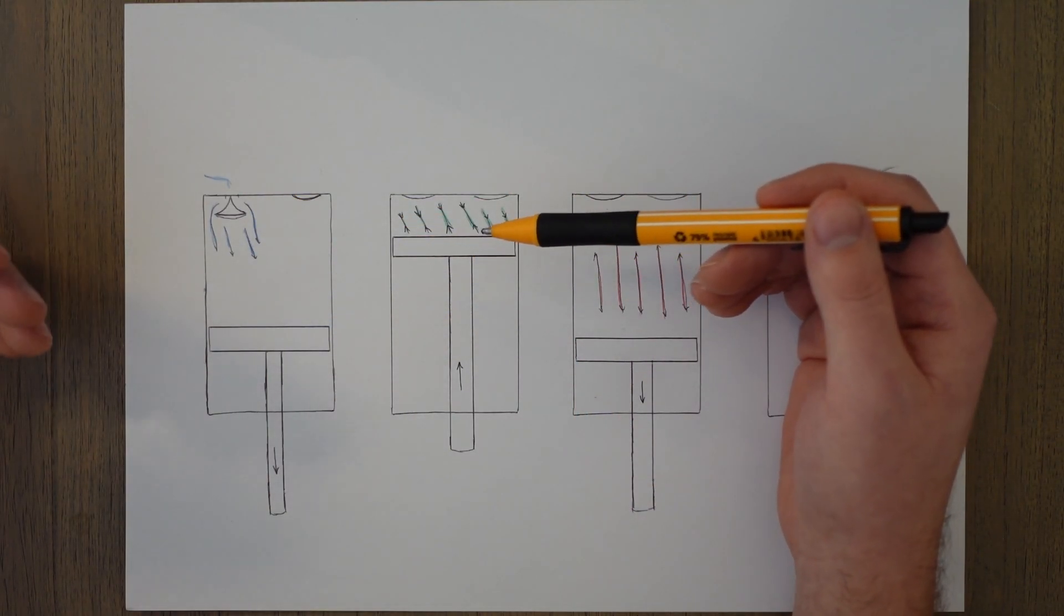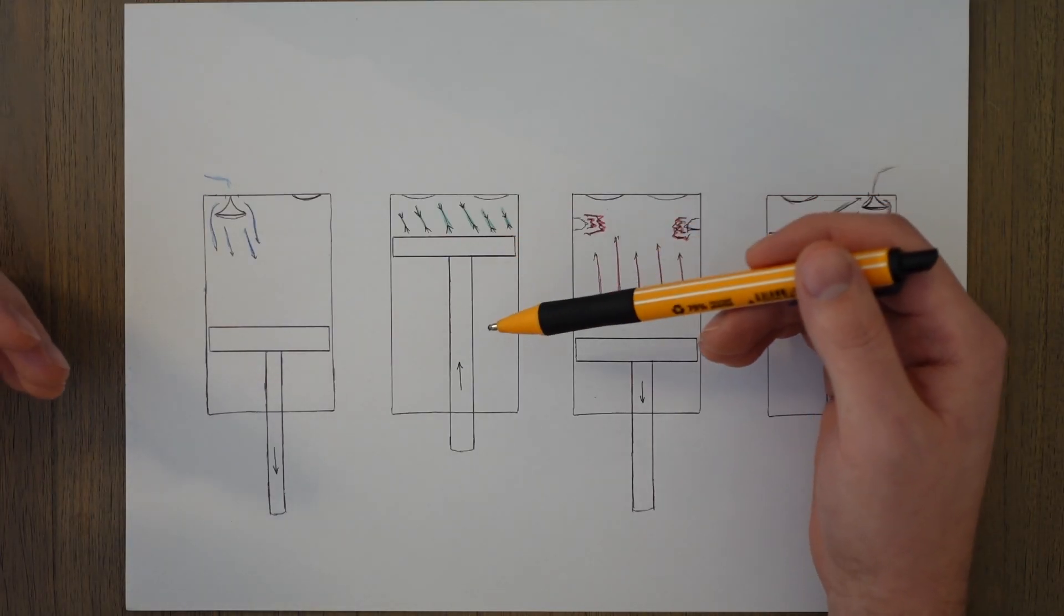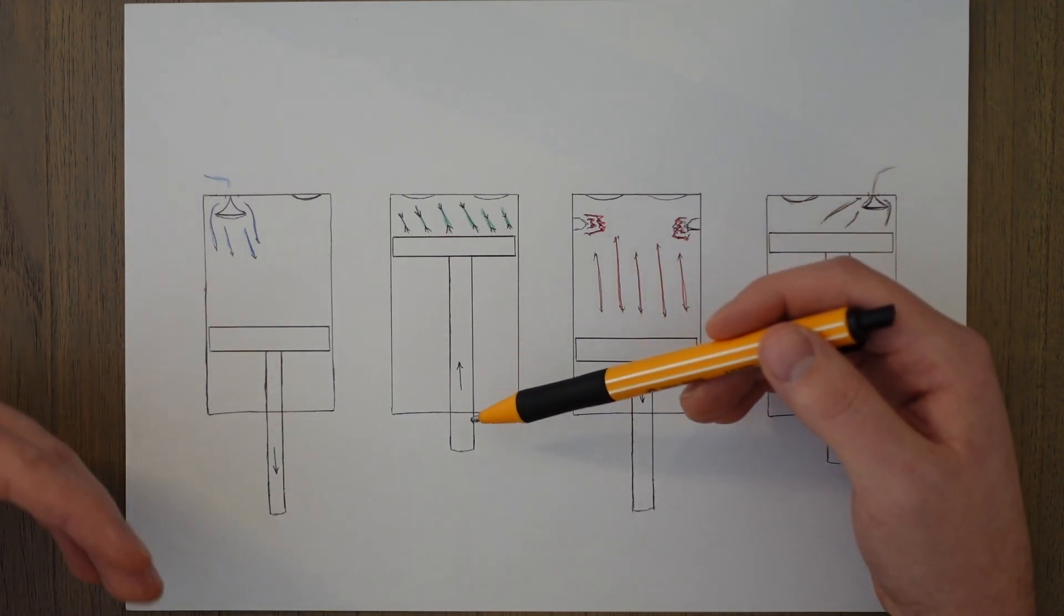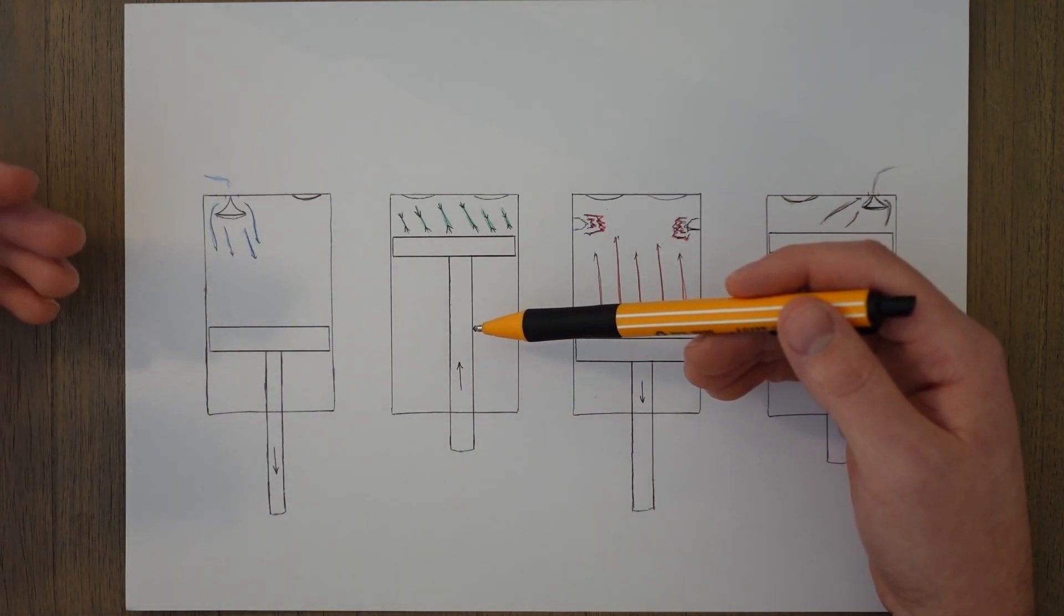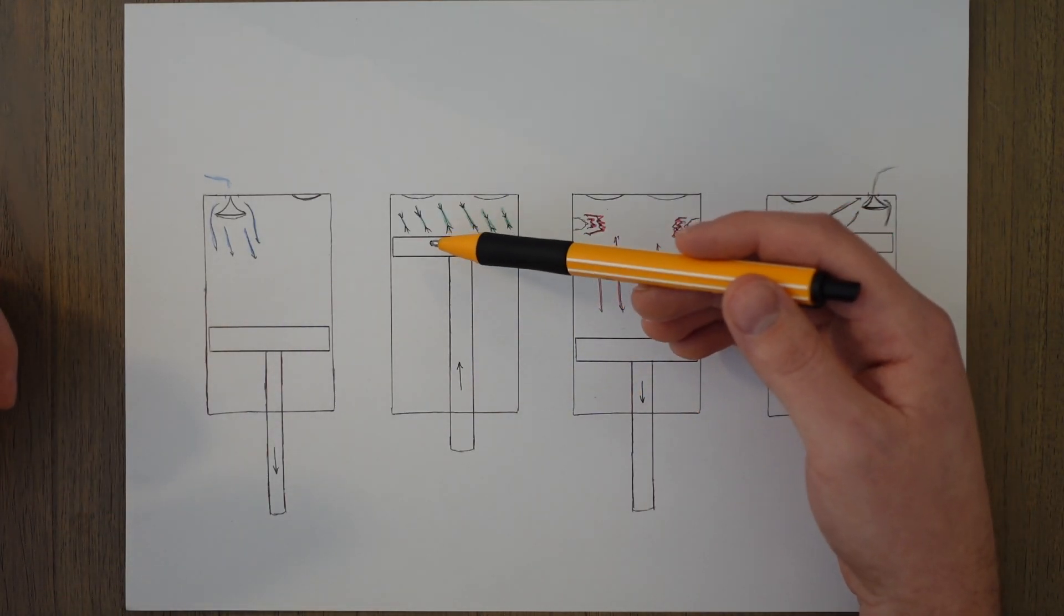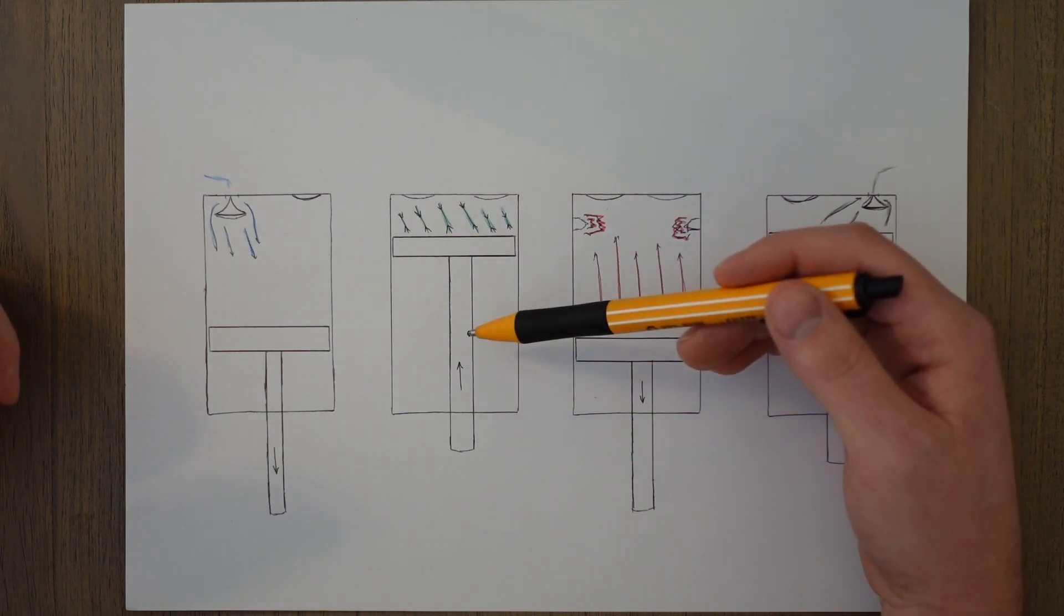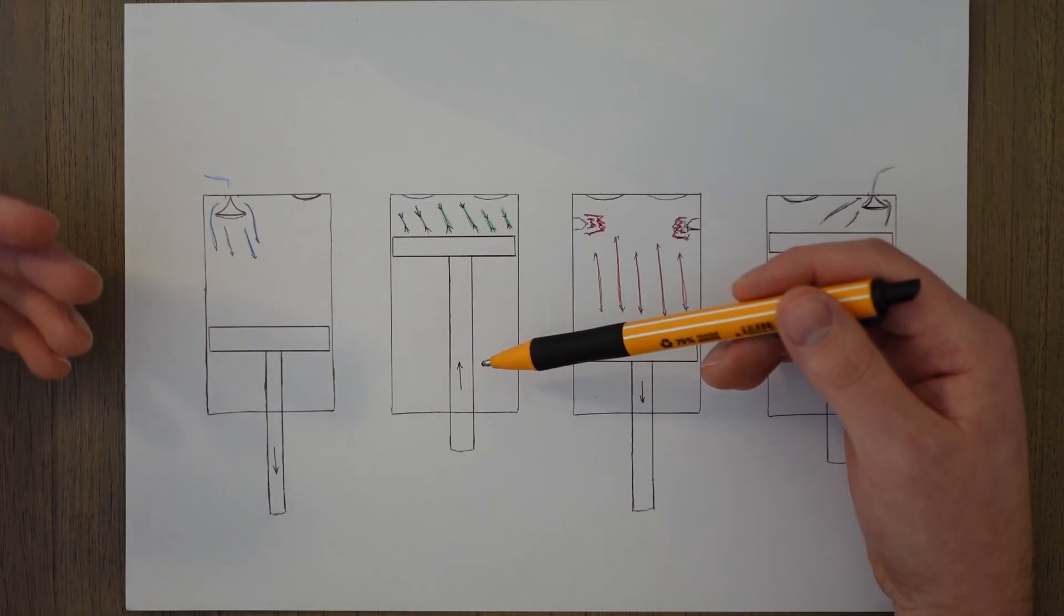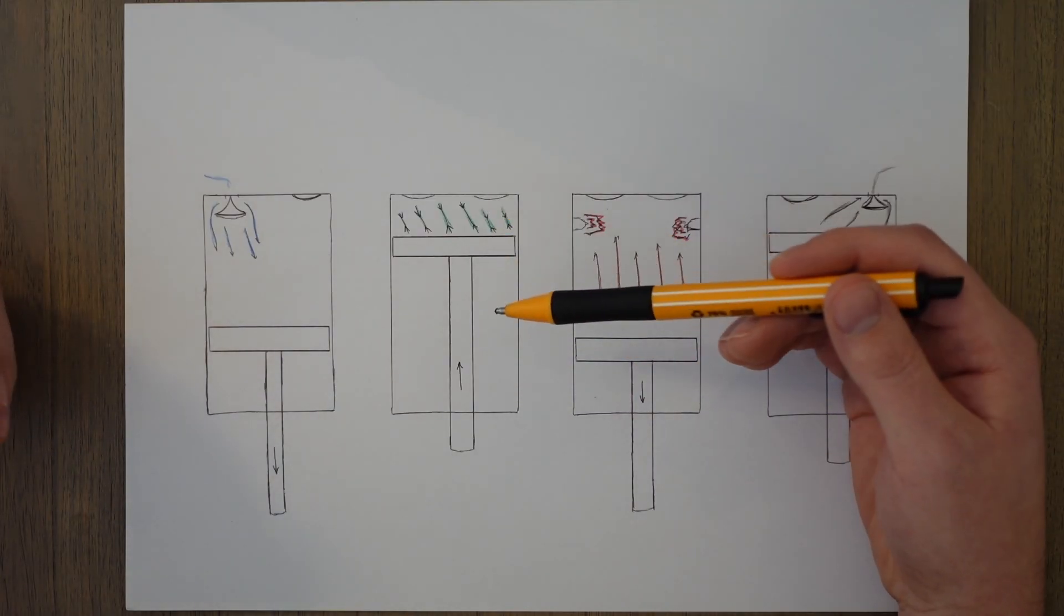The next stage is the squeeze or the compression phase. As the piston reaches the bottom of the cylinder, it is forced back up by that residual momentum in the crankshaft and the inlet valve is closed. As it travels up, the volume decreases, and according to the combined gas law, this means that the pressure and the temperature of the gas must increase.